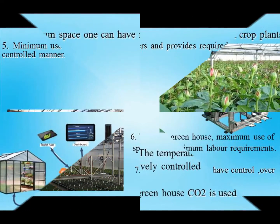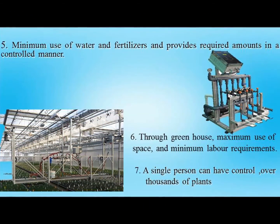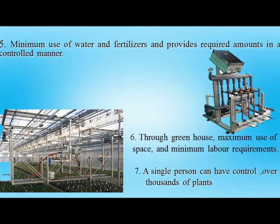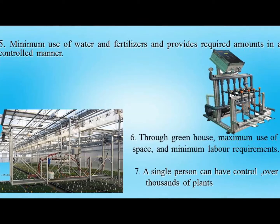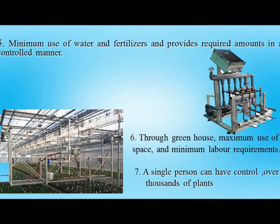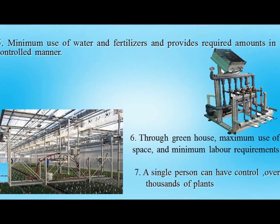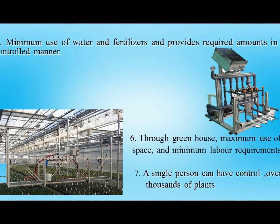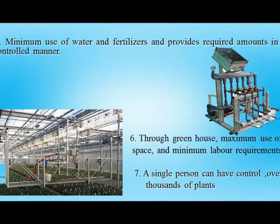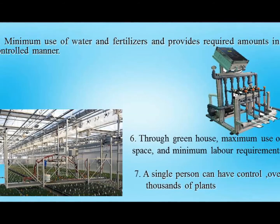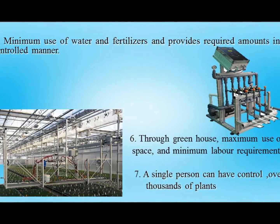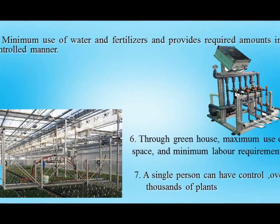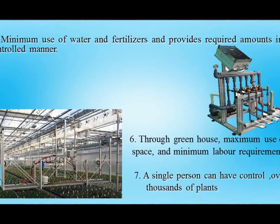The next advantage is that Poly House farming is made in such a way that it can provide water and fertilizer in required amounts in a controlled manner, which can result in higher yield of the crops. Greenhouse needs less water for irrigation than normal farming, as it traps more moisture inside. In Poly House, fertilizer application is easier and is controlled automatically with the help of drip irrigation.